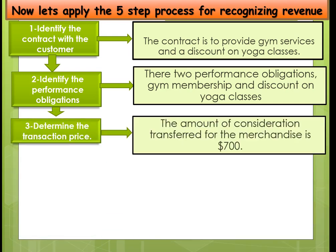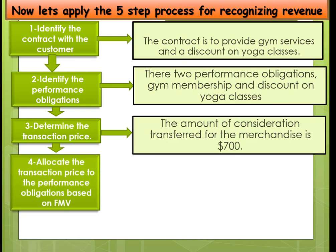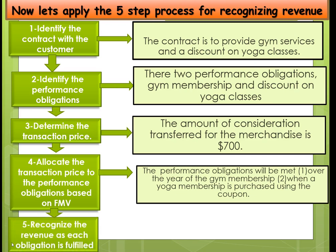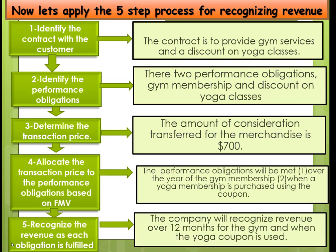Next, we're going to determine the transaction price, which is $700. Then we're going to allocate the transaction price to the performance obligations based on fair market value — the normal gym membership and the value of the discount for the yoga classes. Then we can recognize revenue when the performance obligations are done.